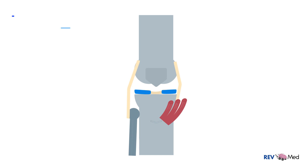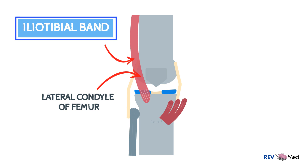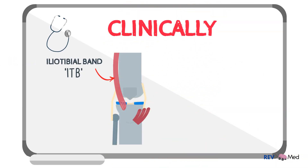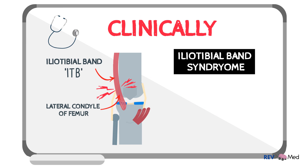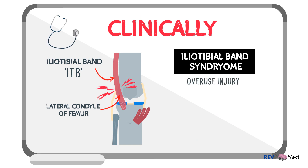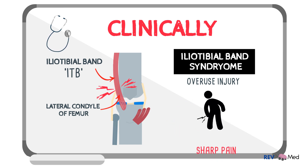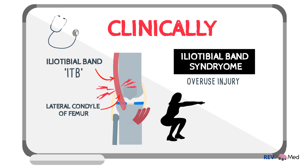Our last structure is the iliotibial band, which runs laterally over the lateral condyle and attaches to the anterior lateral part of the tibia. The iliotibial band (ITB) can get irritated with friction at the point where it runs over the lateral condyle of the femur. This is known as iliotibial band syndrome (ITBS), a common overuse injury seen in runners and cyclists. ITBS causes a sharp pain at the lateral condyle when a person squats at 45 degrees, such as when bending and flexing.